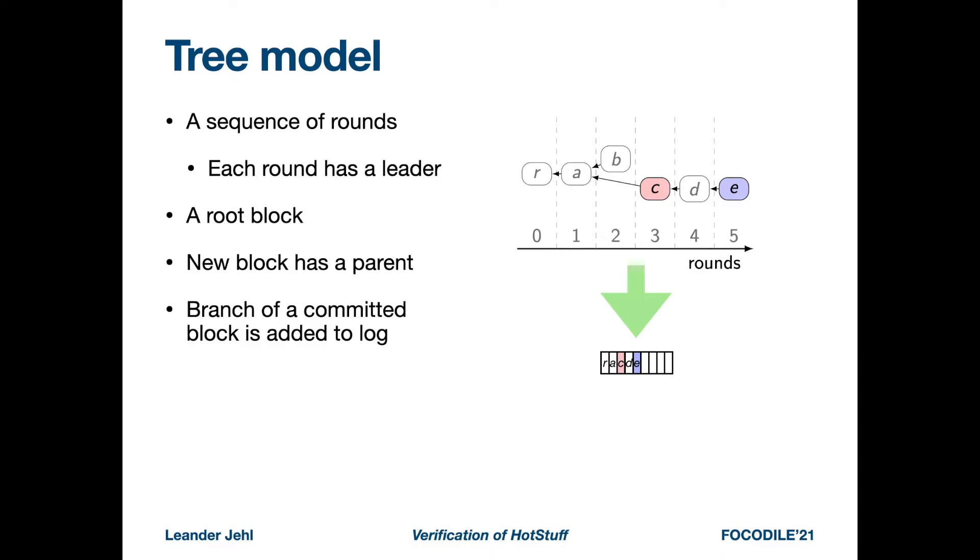So in this model, it is important that all the committed blocks lie on the same branch. In the figure, if block B would be committed, it would result in inconsistencies in the log. So the property that any two committed blocks lie on the same branch is the main safety property in the tree model.